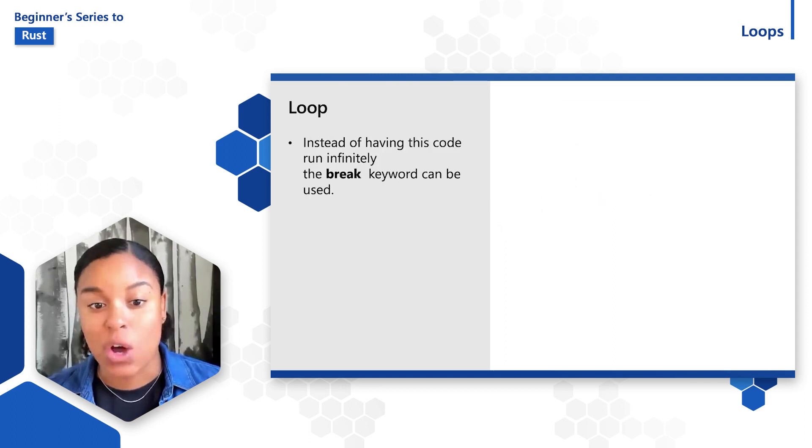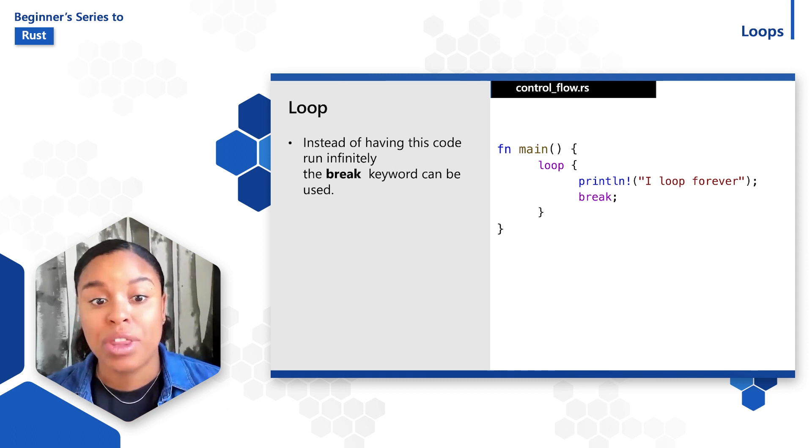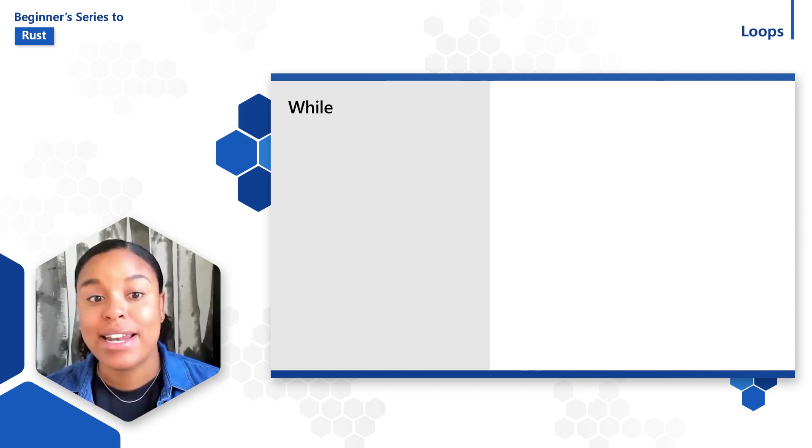Instead of having this code run infinitely, the break keyword can be used. When the break keyword is encountered, the program will stop executing the loop and move on to the next line of code. Whenever you use a loop, you'll want to include a break keyword at some point to stop the loop. Loops are used in scenarios when you know an operation might fail and need to give it another try.